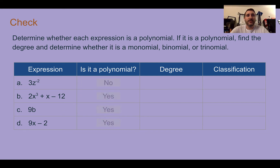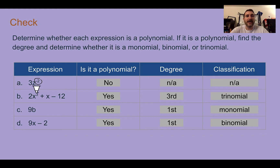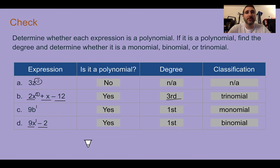Check your answers. A is not a polynomial — it has a negative exponent. The others are all polynomials. B has a highest exponent of 3, so it's a 3rd degree trinomial with three terms. C has one term so it's a monomial, and there's a hidden exponent of one, so it's 1st degree. The last one is also 1st degree but with two terms, so it is a binomial.